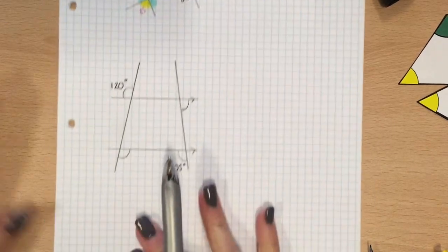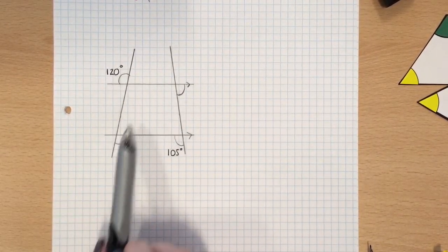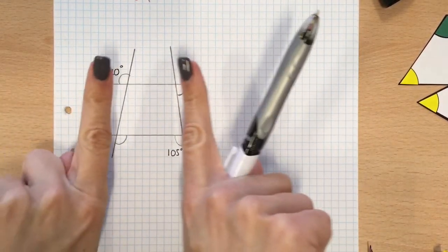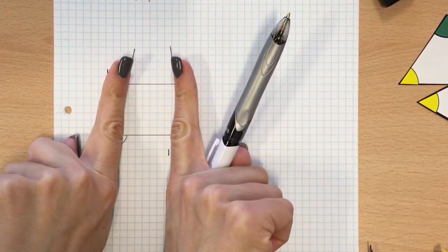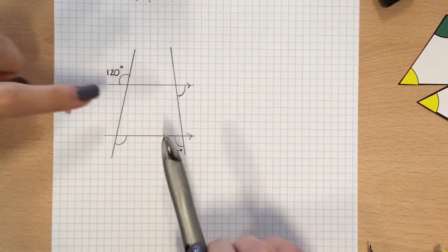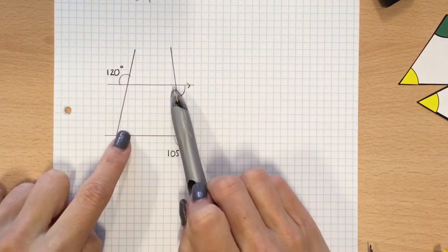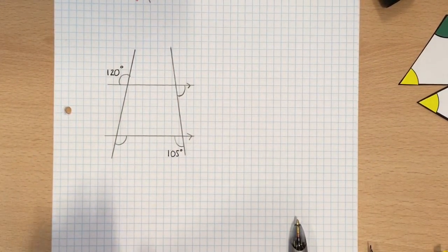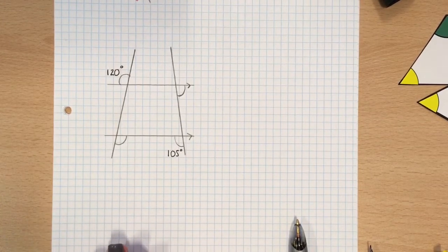Right, this shape is slightly different. I have got two parallel lines, so I've got a pair of parallel lines. However, this time, these are not parallel. Therefore, I can't assume that these are the same, and these are the same. So actually, there are two separate lots of angles on this one. So for this one, I'm going to need four colours.